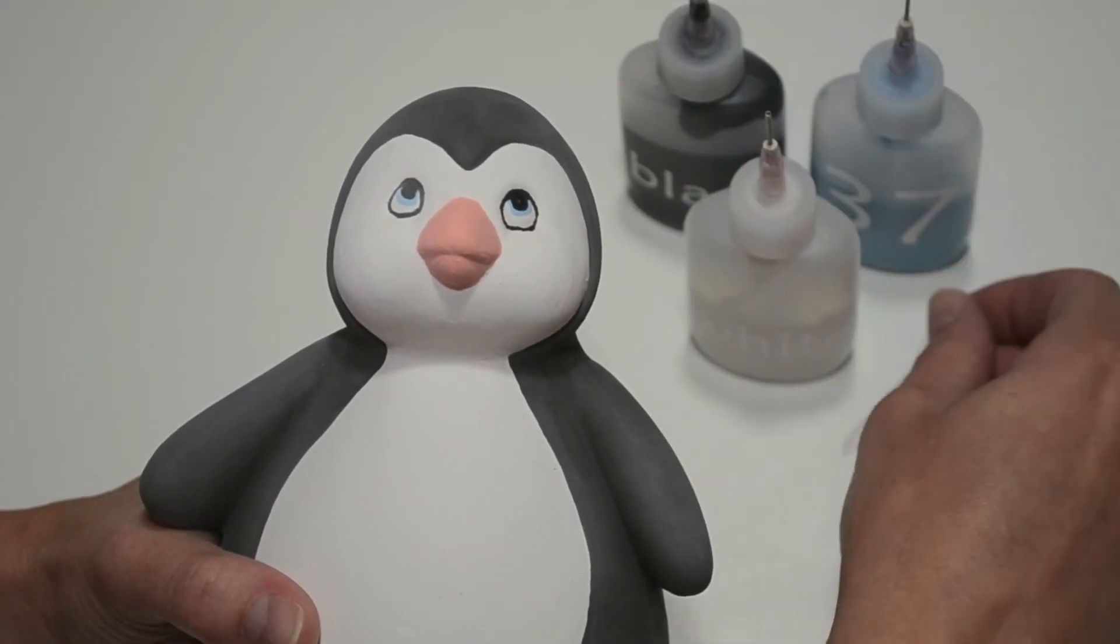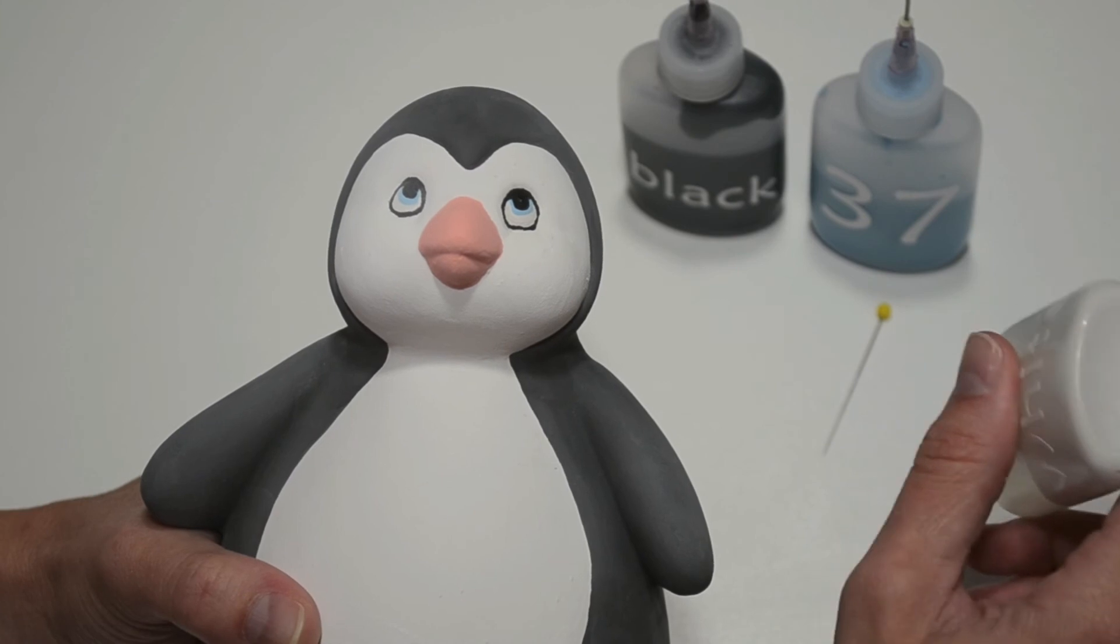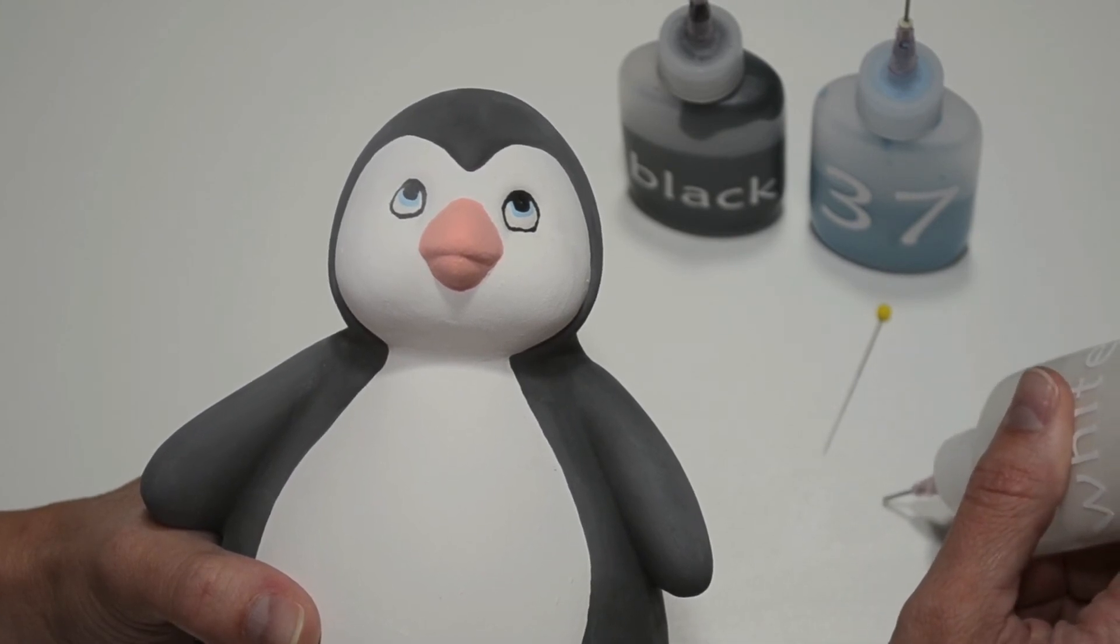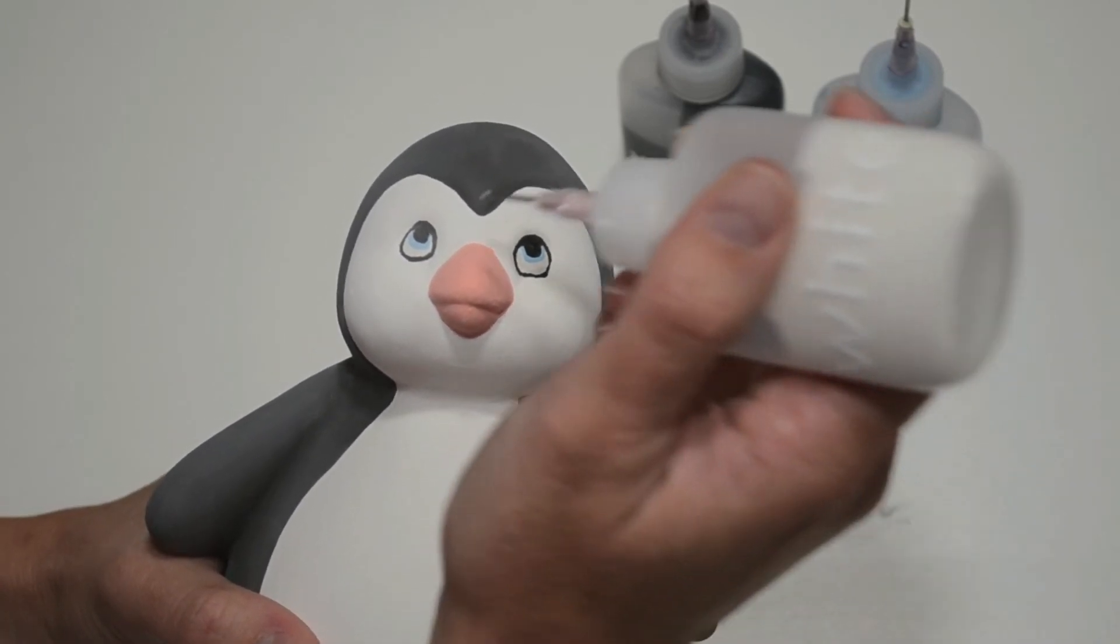And lastly, for the twinkle in his eyes. Notice that I'm squeezing a little paint out of the fun writer first so I can get used to the flow of the paint before putting it on the piece. Don't worry about getting paint on our tables - we'll clean it right up.